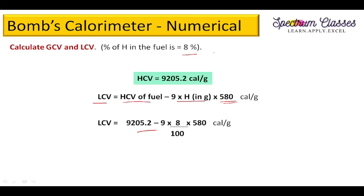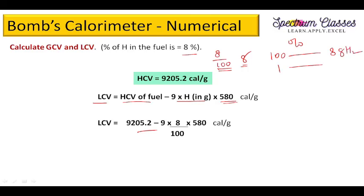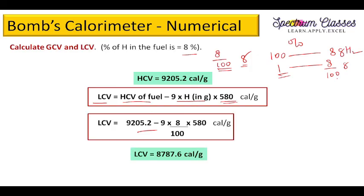Since hydrogen is given in percent, divide by 100 to convert to grams per gram of fuel — because if 100 grams of fuel contains 8 grams of hydrogen, then 1 gram of fuel contains 8/100 grams of hydrogen. On solving, we get the LCV. This is the answer for HCV and LCV.